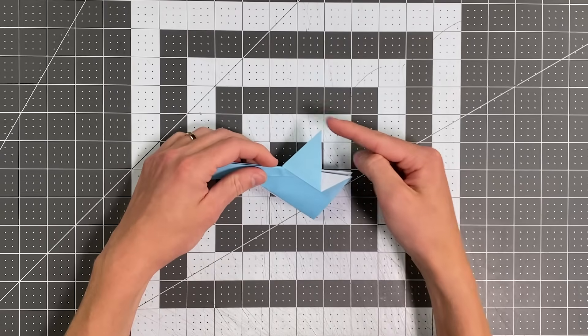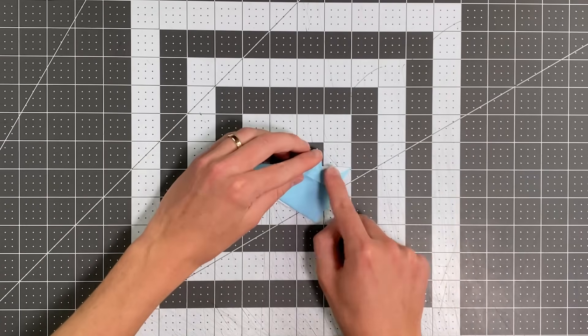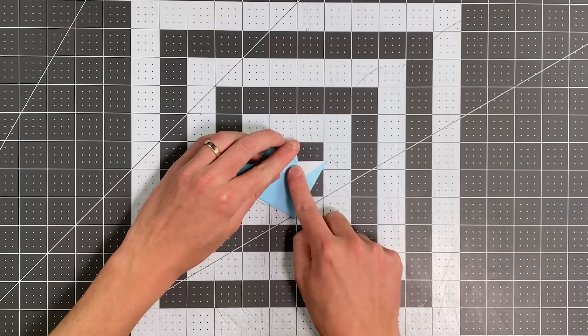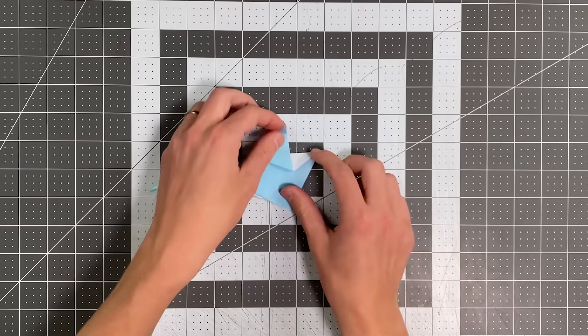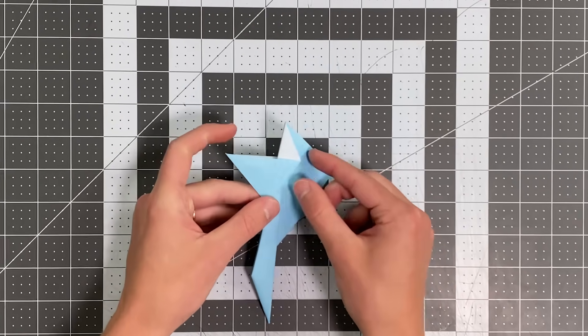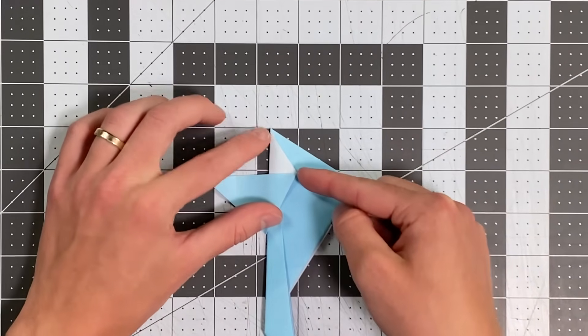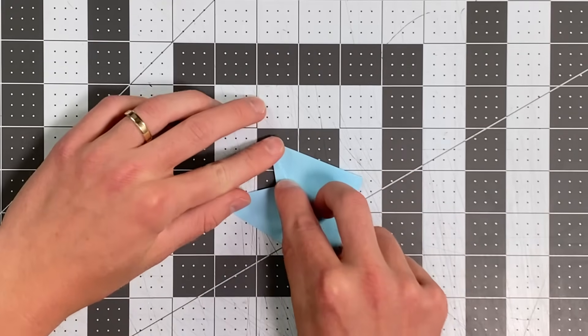And now I'm going to take this point here and fold it right to this point, this intersection of that edge and this edge here. And I'm not creasing all the way. I'm just making a little reference point on the back edge of the fin. And now we're about to do a swivel fold. So first, I need to prepare by folding this edge to that edge. Right like so.